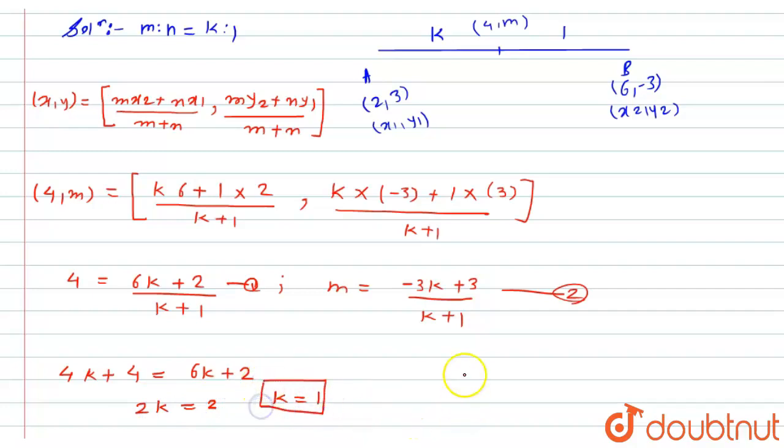Now, this value of k, I will put in equation number 2. So, here I will get the value of m as m = (-3(1) + 3)/(1 + 1). Now, -3 + 3 = 0. So, m = 0, and here I will get the solution for this particular question.